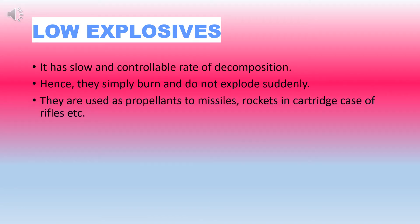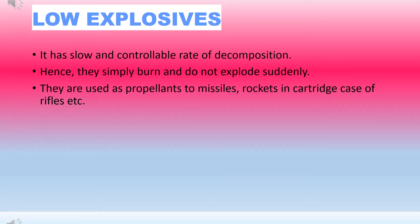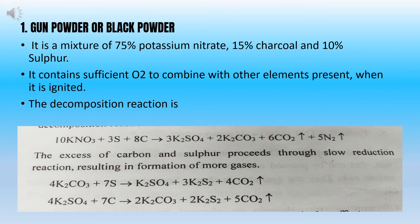Low explosives are substances whose rate of decomposition is very slow and controllable. Hence they simply burn and do not explode suddenly. They are used as propellants for missiles, rockets and in cartridge cases of rifles. Black powder is a mixture of 75% potassium nitrate, 15% charcoal and 10% sulfur. It contains sufficient oxygen to combine with other elements present when it is ignited. The excess of carbon and sulfur proceeds through slow reduction reactions resulting in the formation of more gases. Large volume of gaseous products account for its explosive effect.